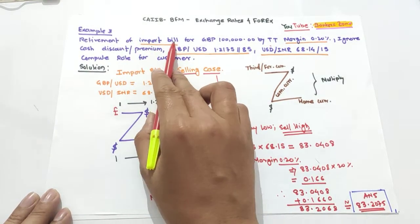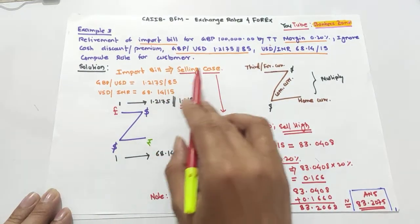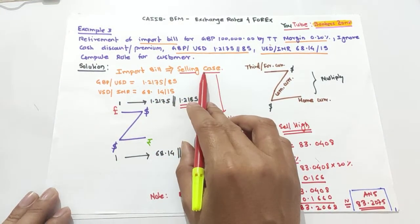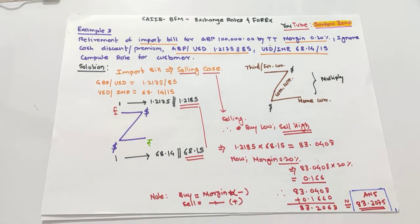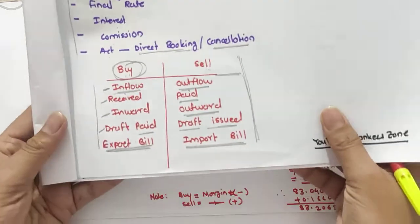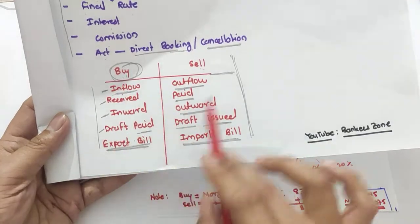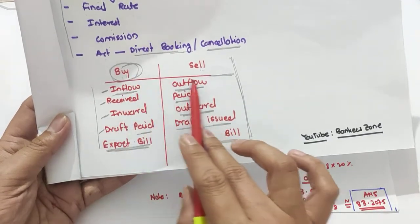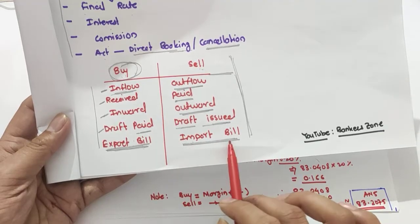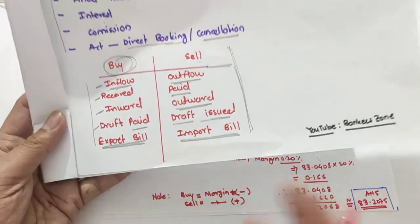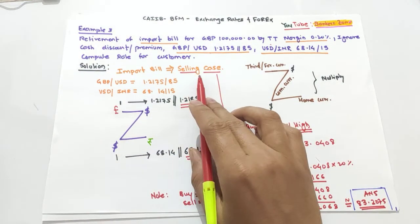For an import bill, the case is a selling case. In the very first video, I explained that there are keywords from which you can determine whether it is a buying or selling case. The word 'import bill' tells us it is a selling case.